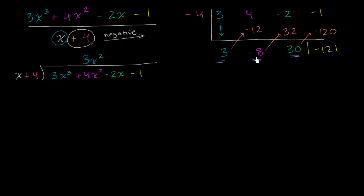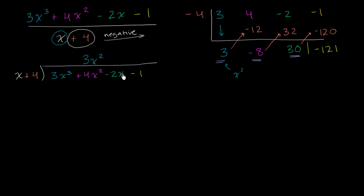In our synthetic division right over here, this is the x, and that right over there is the x squared term. So you went from 3x to the third to 3x squared — we essentially divided it by x. And we could blindly do it because we assumed that we were dealing with just a 1x to the first right over here. Let's keep going and see the parallels and see why we're essentially doing the exact same thing.